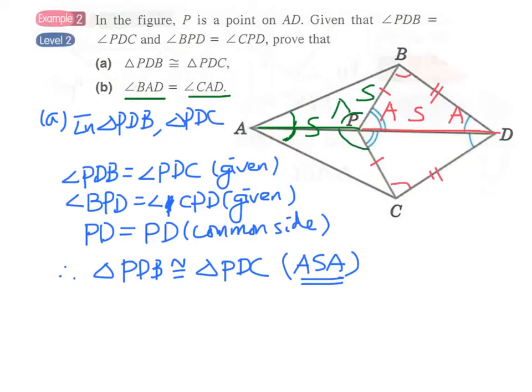Therefore, based on SAS, now we have SAS, triangle APB will be congruent to triangle ACP. And finally, these two angles will equal to each other.